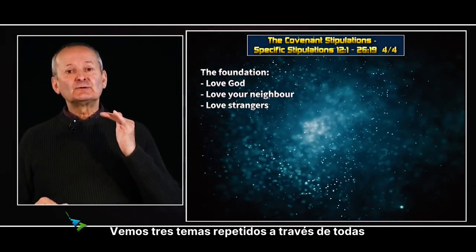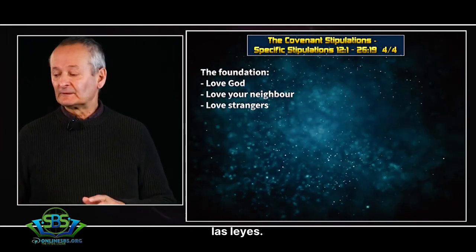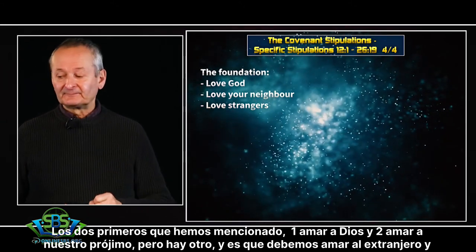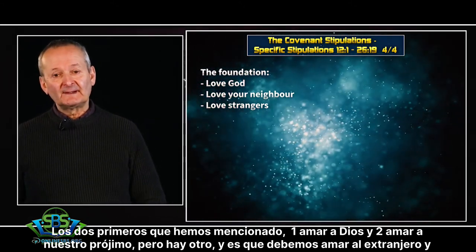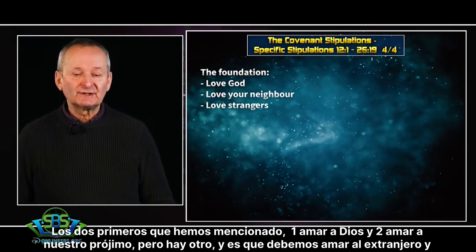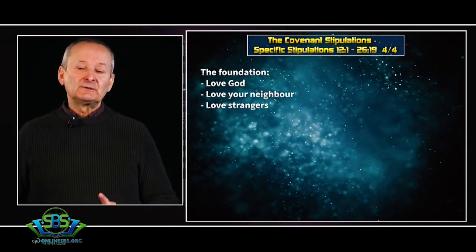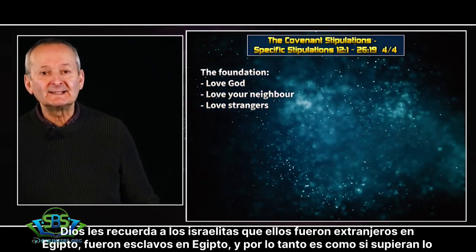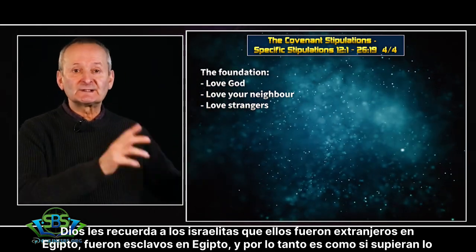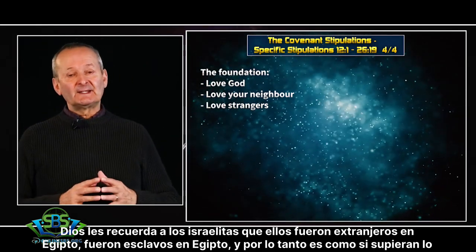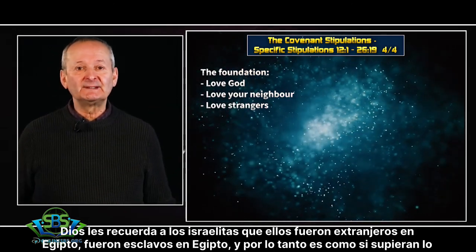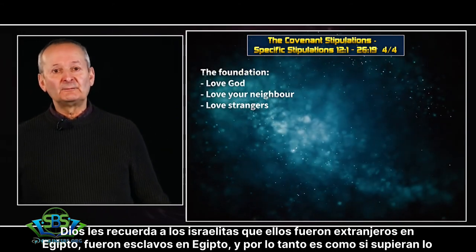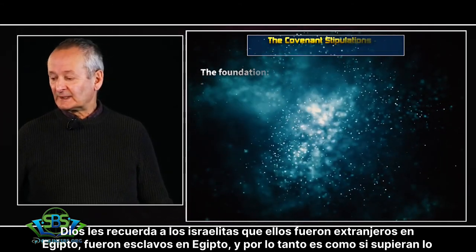When it comes to these laws in Deuteronomy, we see three repeated themes throughout. The first two we've mentioned already: we're to love God and we're to love our neighbour. But there's another one, and that is to love the stranger and the foreigner. God reminds Israel that they were strangers and slaves in Egypt, and therefore they know what it's like to be an alien. God wanted foreigners to be welcome in Israel, protected and looked after.